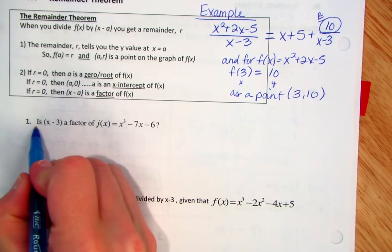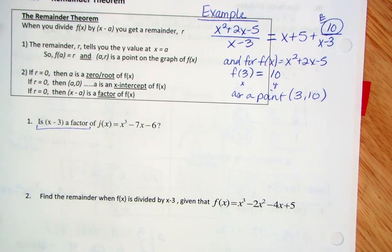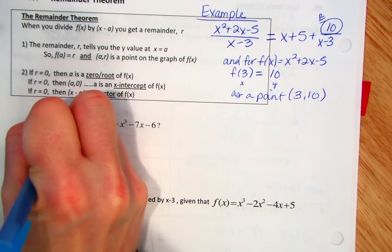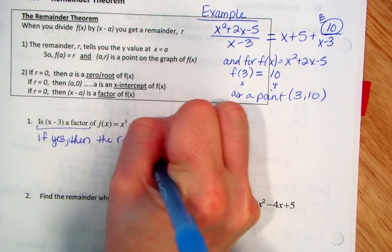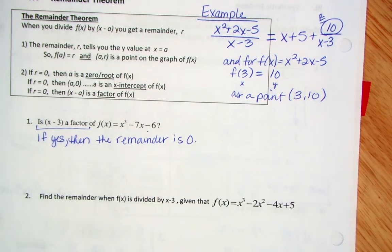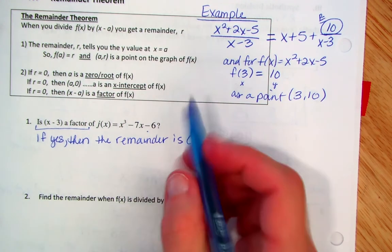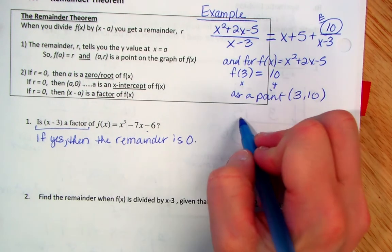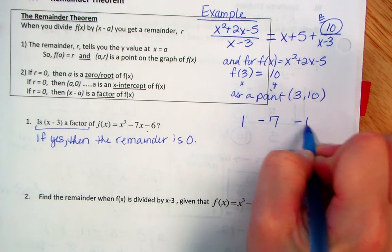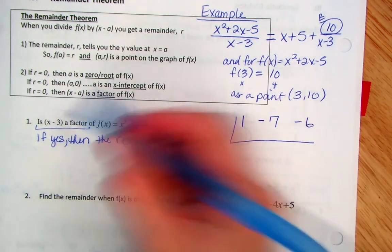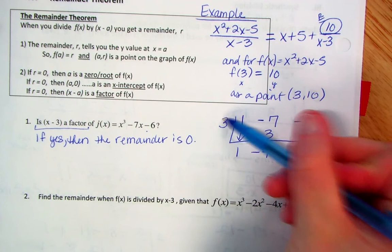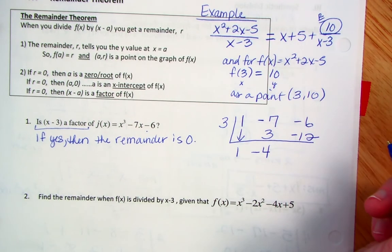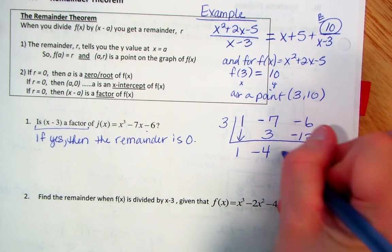The question asks: is x minus 3 a factor? If it is a factor, then using the remainder theorem, the remainder is 0. We can do synthetic division with coefficients 1, 0, negative 7, negative 6 — we need to put in the placeholder because it goes from x cubed to x, skipping x squared. We use 3 out front. Now 3 times 1 is 3. Add: 3. 3 times 3 is 9. Add: 2. 3 times 2 is 6. Remainder is 0.